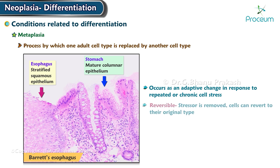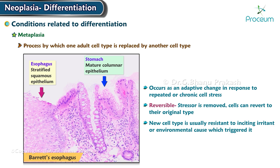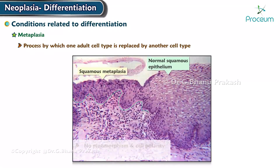Typically, metaplasia is reversible, meaning that if the stressor is removed, the cells can revert to their original type. The new cell type is usually resistant to the inciting irritant or environmental cause which triggered it. There is no pleomorphism and cell polarity, and cell and nuclear size are not altered.